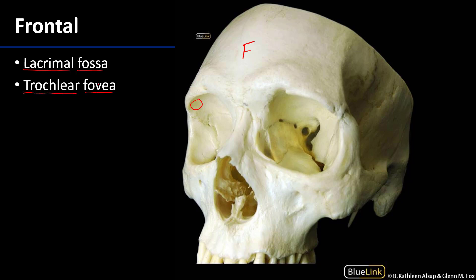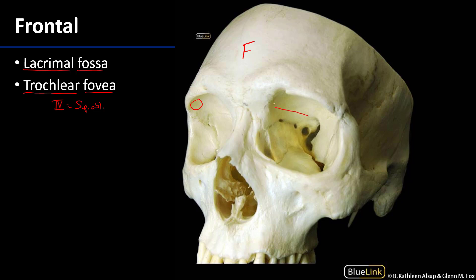The trochlear nerve — cranial nerve 4 — serves the superior oblique muscle. The superior oblique muscle runs from the apex of the orbit along the medial wall, and its tendon runs through the trochlea, which attaches to the trochlear fovea, then continues over to the sclera on the superior surface of the eye. The trochlear fovea is associated with the trochlea there, and sometimes we can even see a tiny spine of bone associated with the attachment of the trochlea.